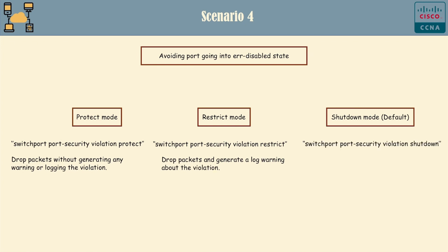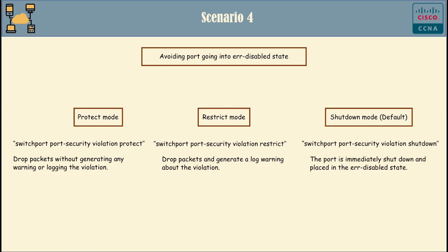Shutdown Mode is the default (command: 'switchport port-security violation shutdown'). When a violation occurs, the port is immediately shut down and placed in the err-disabled state. Choose the mode that best suits your security and operational needs. Protect and Restrict modes allow the port to stay operational while providing different levels of visibility into security violations, whereas Shutdown Mode enforces strict security by disabling the port entirely upon a violation.